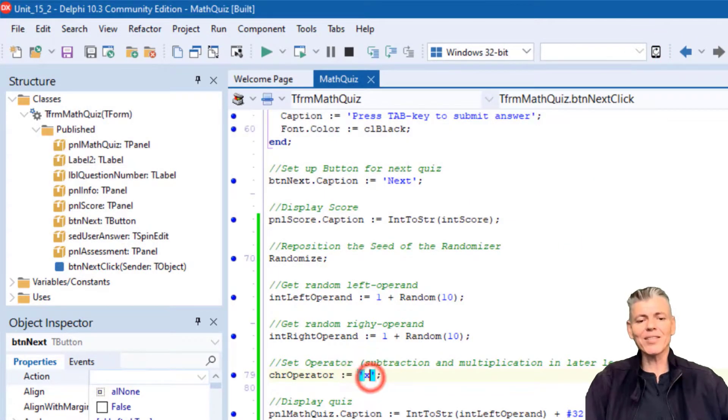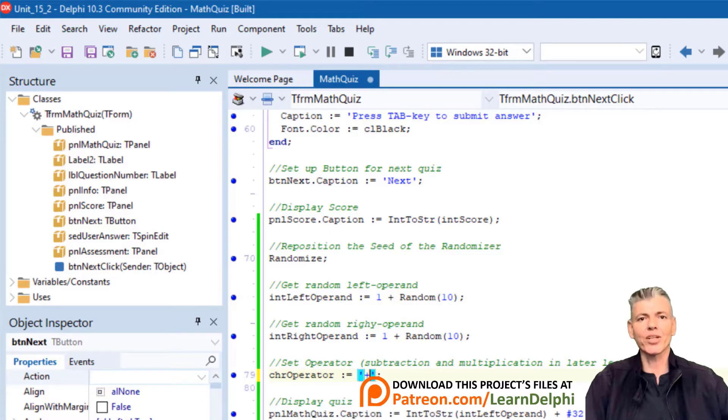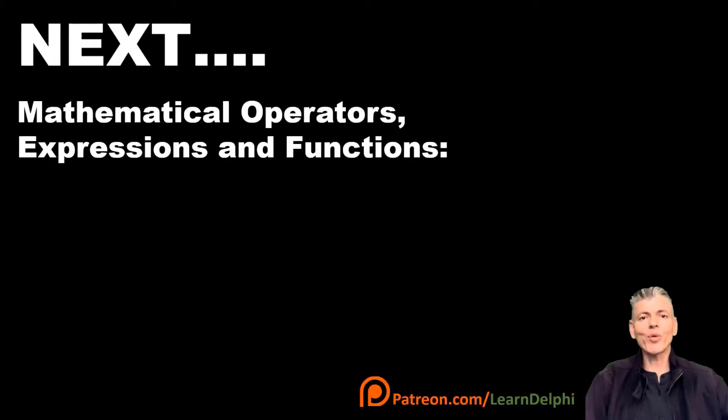Change the operator back to plus. As mentioned earlier, when we do arrays in a future lesson, we will also randomize the operators. You can now go and play with bigger random numbers and see if you can finish the rest of the project. Check the demo at the beginning of this video to see how it works. Save this project. Next time we will continue with mathematical procedures, functions, operators, and expressions. We will finish this project.